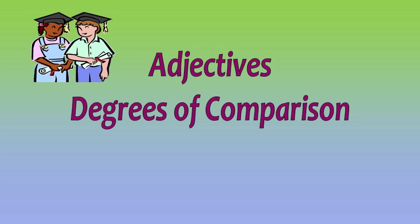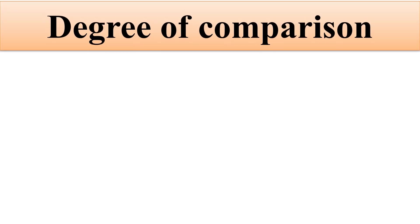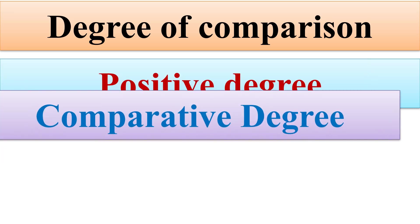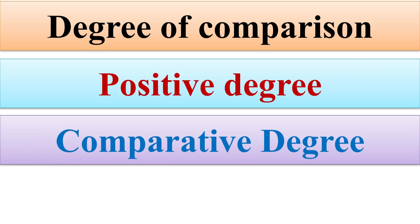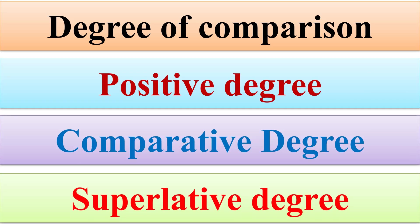Now, we will see the degrees of comparison in adjectives. We use degrees of comparison to compare nouns. There are three degrees of comparison: number one is Positive degree, second is Comparative degree, and the third one is Superlative degree.